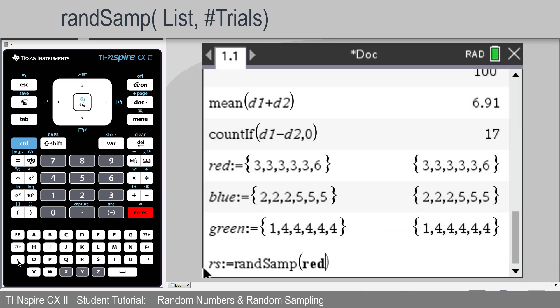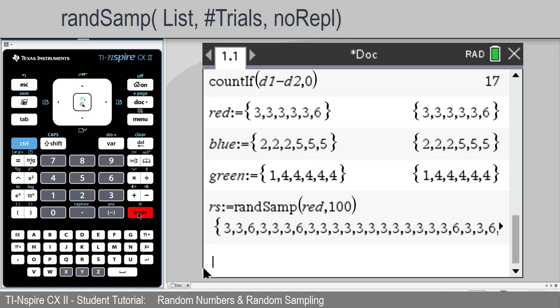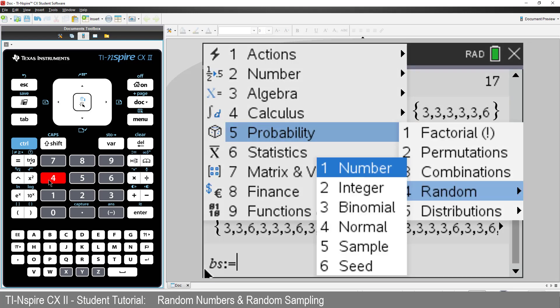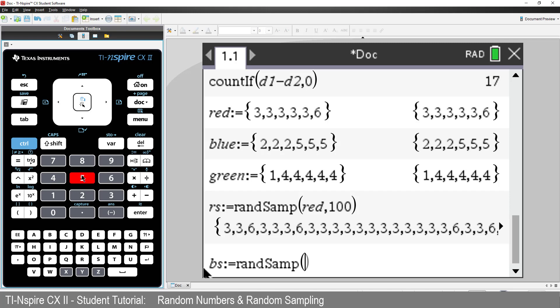There is another option where we can sample with and without replacements. For this case, we're rolling a dice, we can roll any number as often as we like. We'll have the blue dice, which I'll call bs, and we'll sample from the blue dice again 100 rolls.